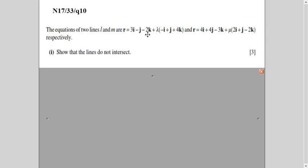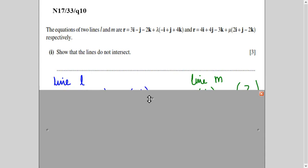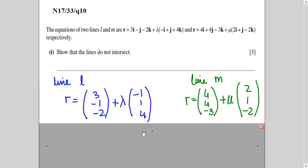Two equations of lines are given to you, names are L and M. You have to show that these lines do not intersect. So first of all, to explain this concept, I am changing these equations of line into this form. Now, this shows a point on the line and this shows the direction of the line.